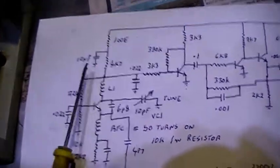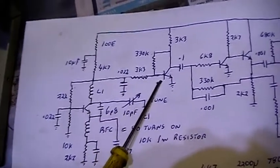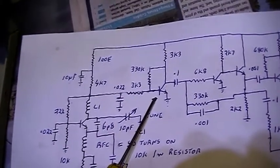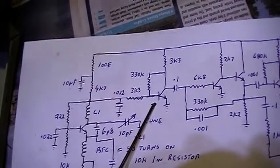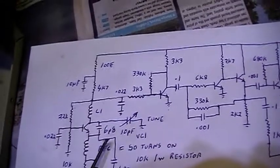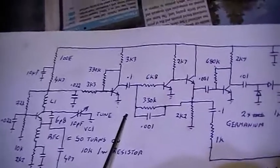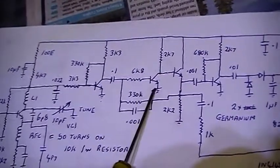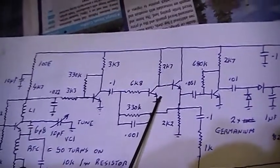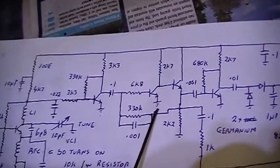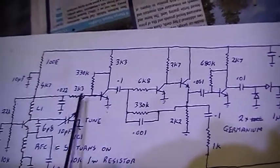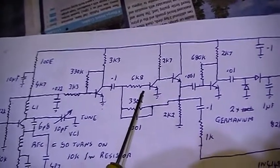We have a BC547. This is a preamplifier stage. Basically, it isolates the rest of the circuit from the super regen stage, and we have a high gain stage here. It's also a low pass filter. We don't want the quench frequency from the super regen stage actually getting into the audio stages.